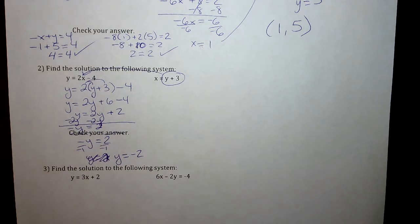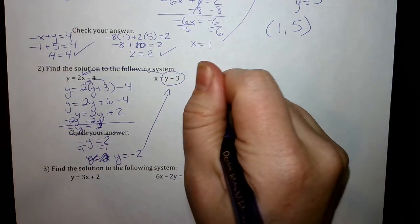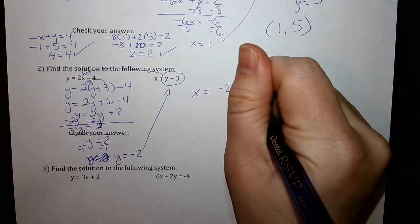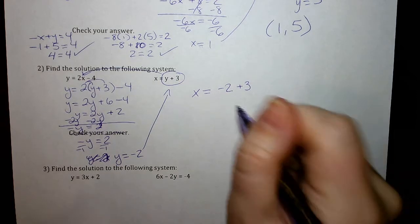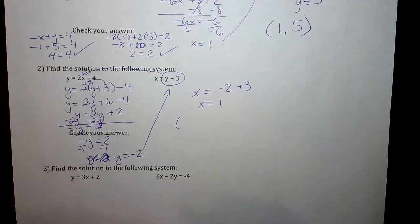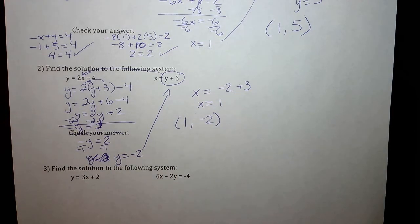So now that we solved for one variable, we have to plug it in and solve for the other one. So I'm going to take this answer and plug it in here to solve for x. So instead of y, I'm going to plug in negative 2. And negative 2 plus 3x is equal to 1. Ordered pairs, x always comes first. So you have 1 comma negative 2.